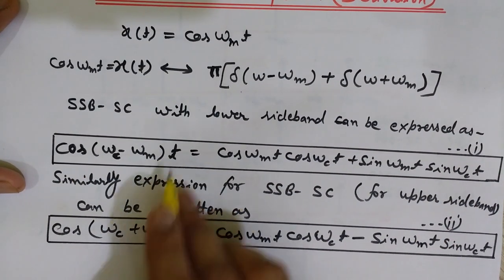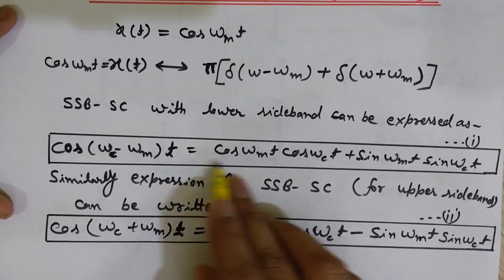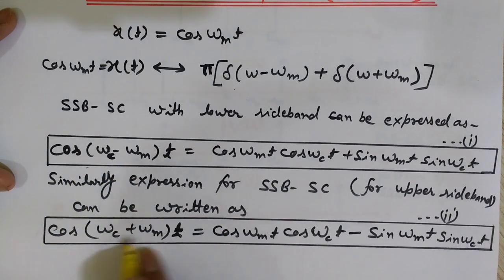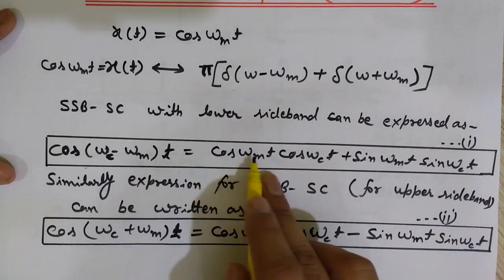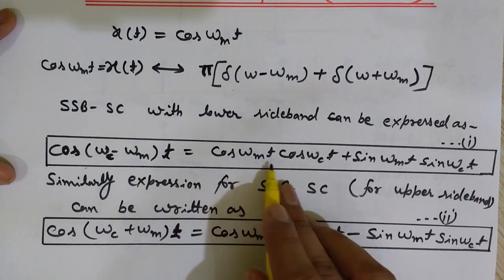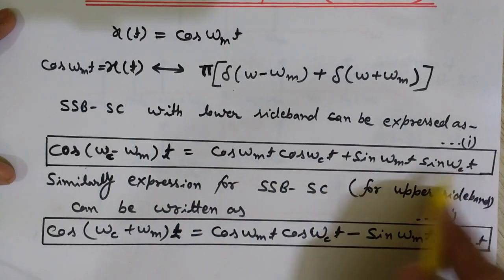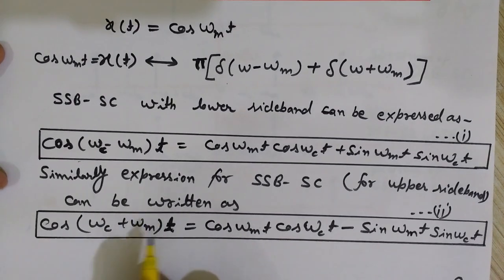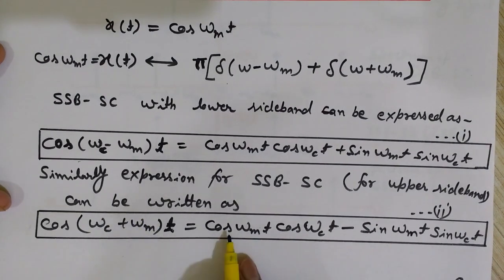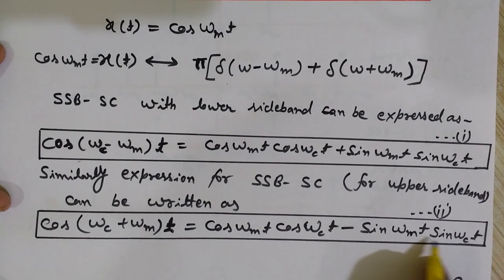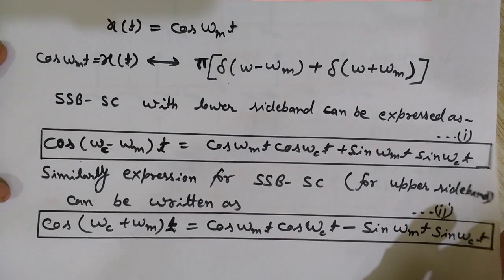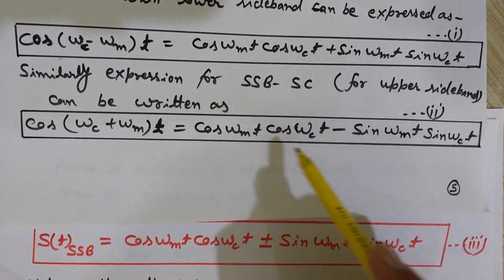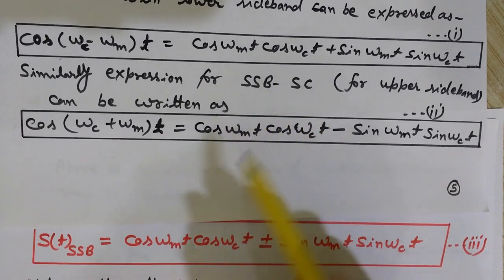Using the basic trigonometric identities — cos(A − B) and cos(A + B) — we expand these. cos(ωc − ωm)·t = cos(ωm·t)·cos(ωc·t) + sin(ωm·t)·sin(ωc·t). And cos(ωc + ωm)·t = cos(ωm·t)·cos(ωc·t) − sin(ωm·t)·sin(ωc·t). So we have expressions for both sidebands.